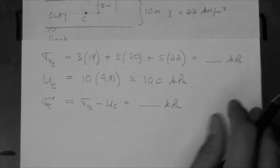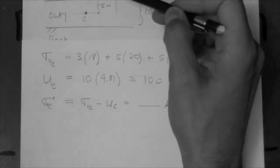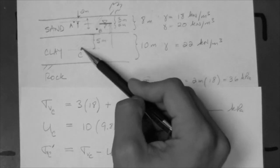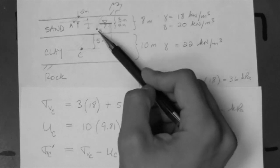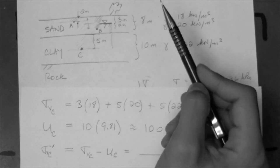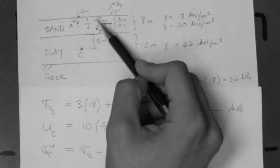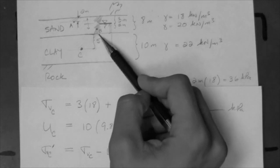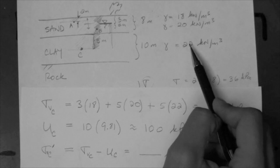The point here is not just to calculate these numbers, but that we basically add all the components that are above a given point. For point A we have two meters of dry sand, for point B we have three meters of dry sand and two meters of saturated sand, and for point C we have three meters of dry sand, five meters of saturated sand, and five meters of saturated clay.